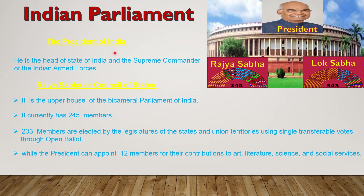Let us discuss about each component of Indian Parliament. The President of India — he is the Head of State of India and the Supreme Commander of the Indian Armed Forces. Rajya Sabha represents Rajya or States. That's why it is also known as Council of States. It is the upper house of Indian Parliament. Constitution limits the membership of Rajya Sabha to 250. At present, 245 members are there in Rajya Sabha. Out of these 245 members, 233 members are elected by the legislatures of the states and union territories using single transferable votes through open ballot.